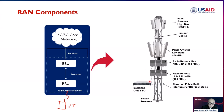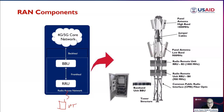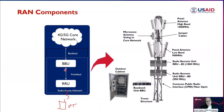The BBU, or baseband unit, is another critical component. It is responsible for processing digital signals received from the RRU and transmitting them to the core network. The BBU is commonly found inside a cabin or enclosure where the power supply, ventilation, batteries, and transmission unit are located. The transmission unit — in this example a microwave — wirelessly connects the radio access network to the core network.